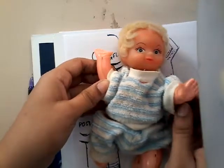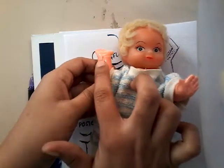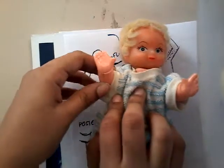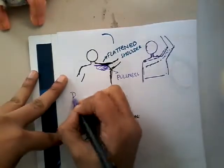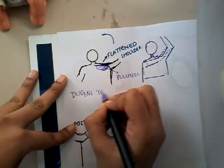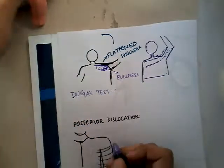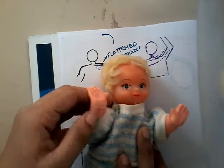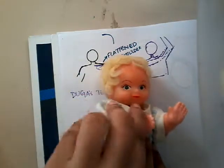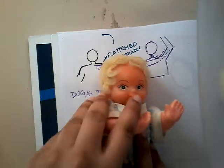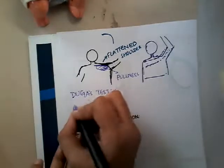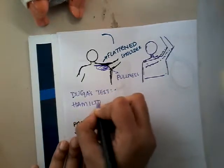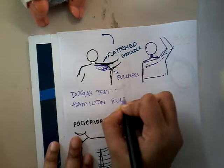If you ask the patient to touch the opposite shoulder with the affected hand, he will not be able to do so — that is Dugas' test. There are two major tests. Number one is Dugas' test: inability to touch the opposite shoulder. The patient, however much he tries, is not able to touch it. Number two is Hamilton's ruler test.